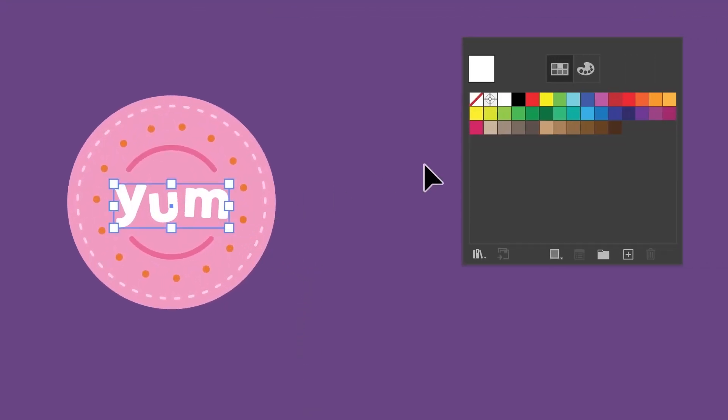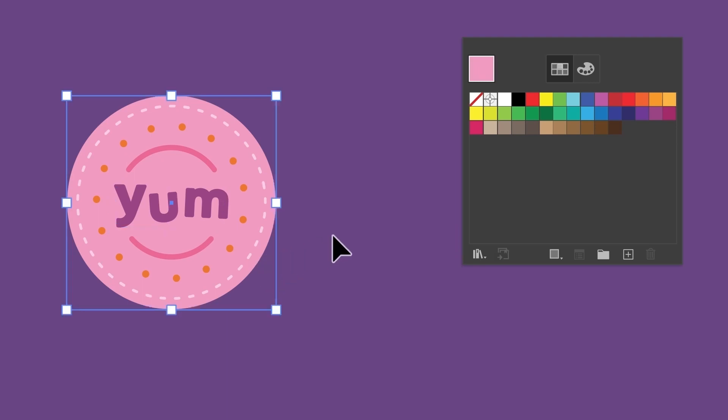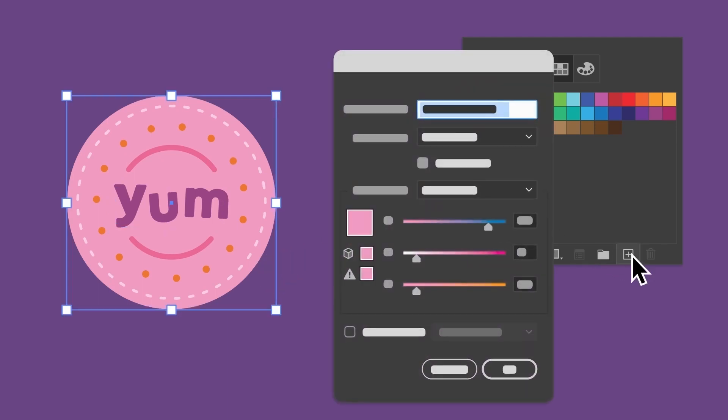For each project you make, your document actually comes with a bunch of saved swatches that you can use. Those colors can be found in the swatches panel in Illustrator. In the swatches panel, you can save your custom color and it'll be saved with this project.